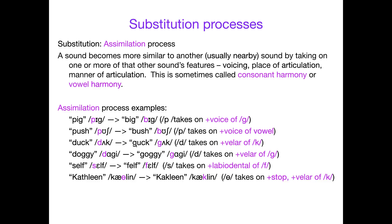For duck becoming 'guck': 'duh' is a voiced alveolar stop and 'guh' is a voiced velar stop — you're changing the place of articulation to velar, assimilating from the 'cuh' sound (a voiceless velar stop) later in the word. For doggy becoming 'goggy': again you're picking up plus-velar, and there's a 'g' right in that word — the voiced velar stop — so 'duh' takes on plus-velar from the other 'guh', turning doggy into goggy.